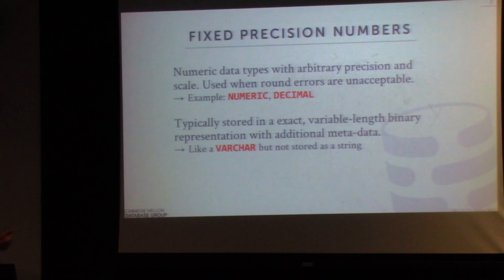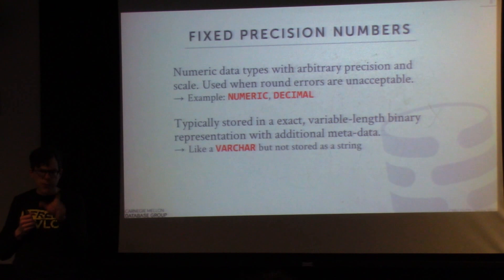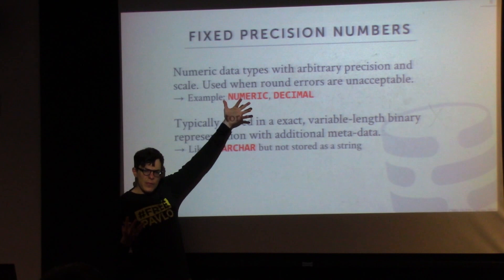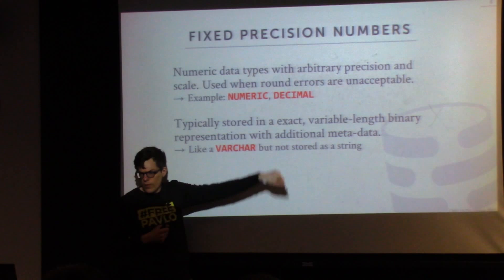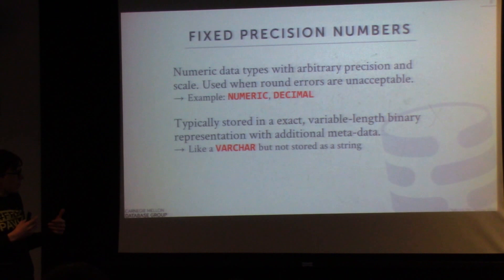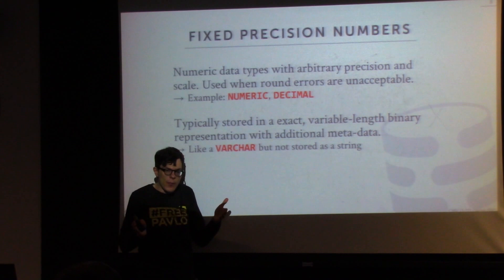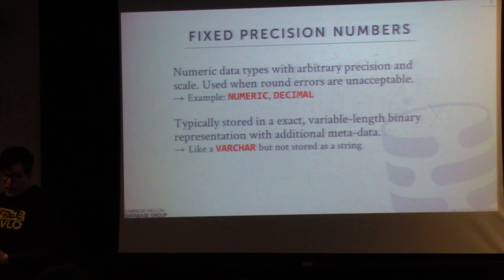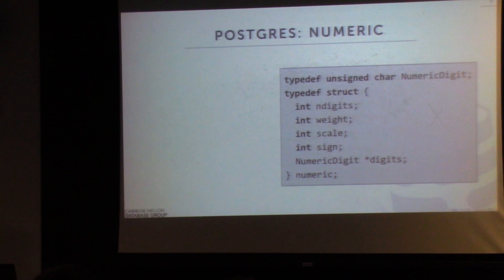If you need to store something without rounding errors, you can't use IEEE floats. This is where fixed-precision numbers — sometimes called arbitrary-precision numbers or fixed-point decimals — come in. The basic idea is to store decimal values in exact form inside the database, maintaining extra metadata to keep track of precision information. To do this, you use the numeric and decimal data types. Sometimes the manuals say these are synonyms, but when I checked Postgres last night, they're actually different — decimal has less metadata than numeric.